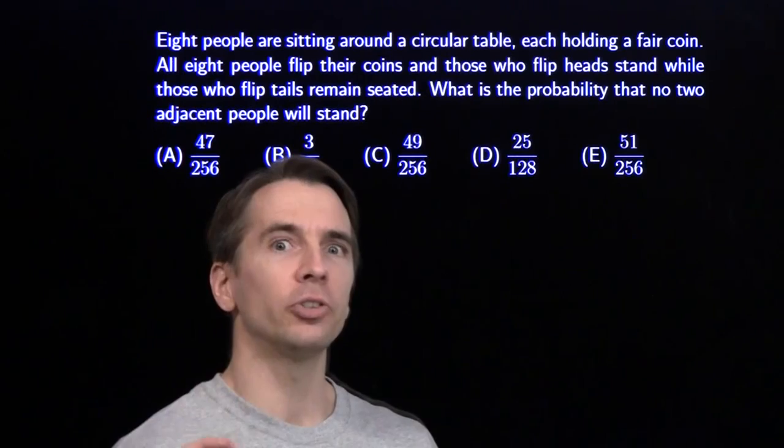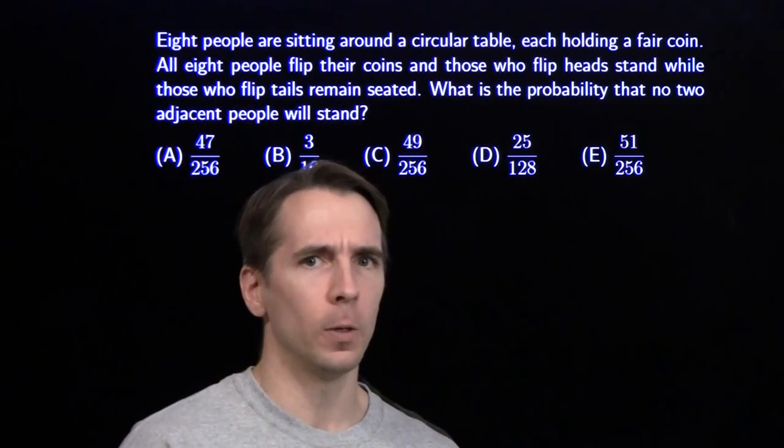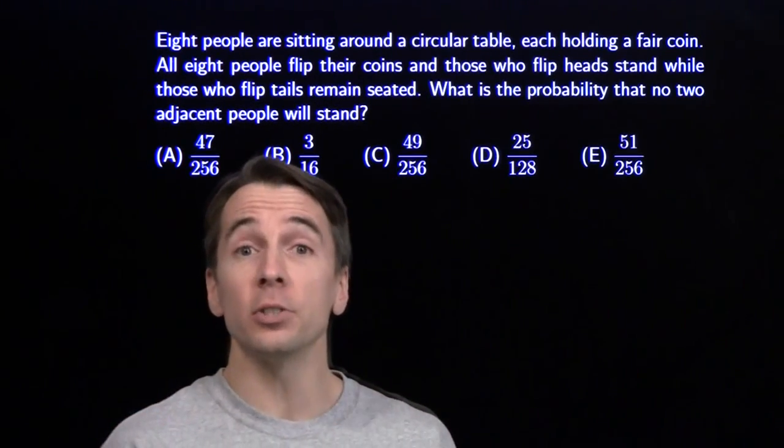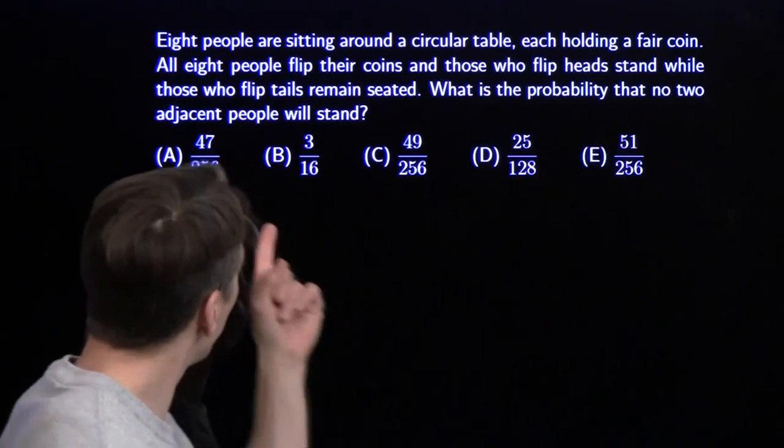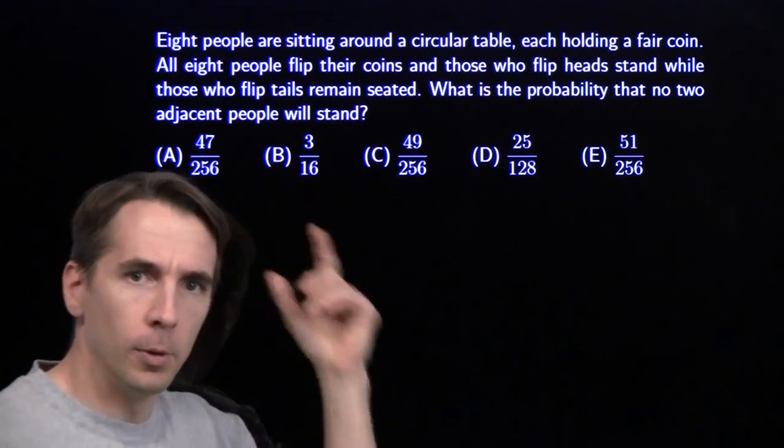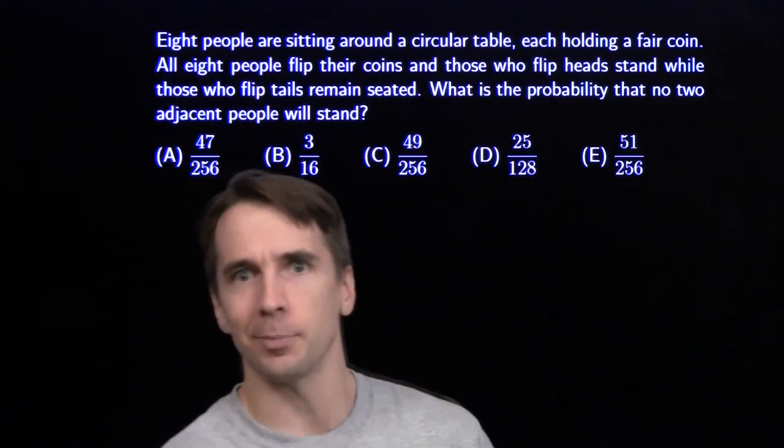We have eight people seated around a circular table. Each one has a fair coin. They're all going to flip their coins, and those that flip heads will stand up, and those that flip tails will remain seated. We want the probability that no two adjacent people will stand.